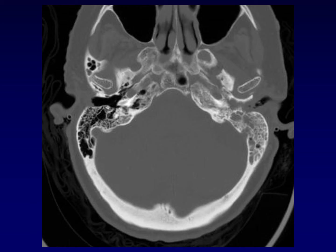This is malignant otitis externa, or necrotizing external otitis. This is an aggressive infection that begins within the external auditory canal but erodes through the wall and famously tracks along the skull base, knocking out cranial nerves at their exit foramina as it traverses from lateral to medial across the skull base. This can be a very difficult infection to eradicate in immunocompromised patients, and is a very important finding on CT. This also prompts us to get an MRI to evaluate the extent of disease and set a baseline for future MRI to evaluate the effectiveness of therapy.